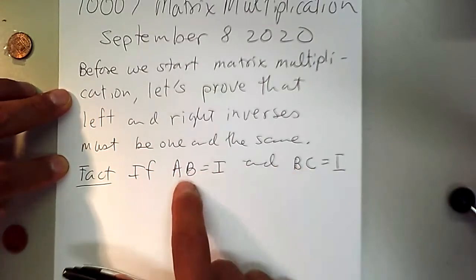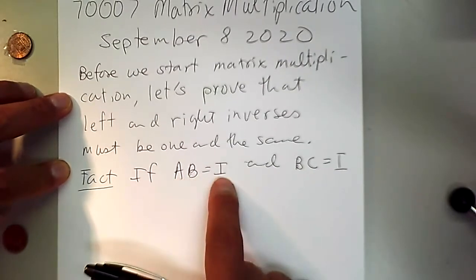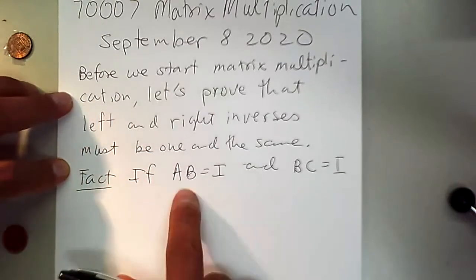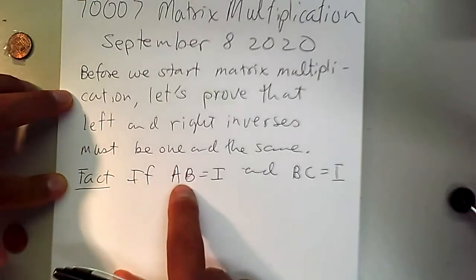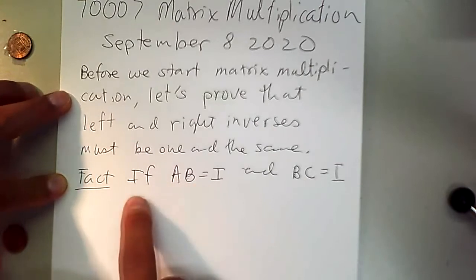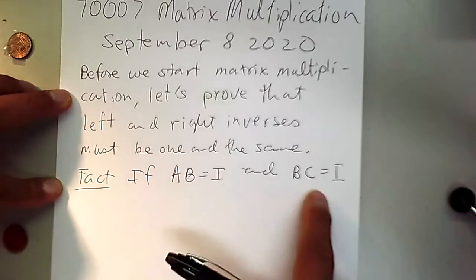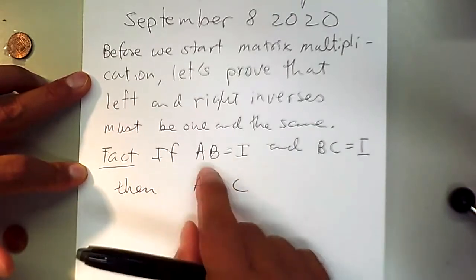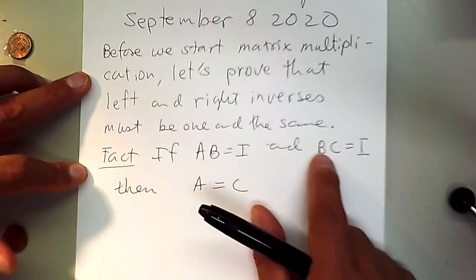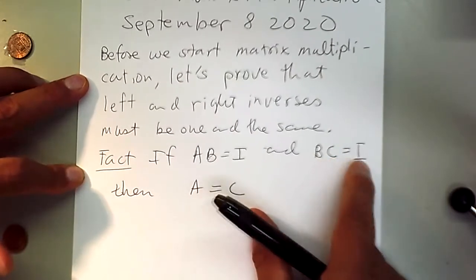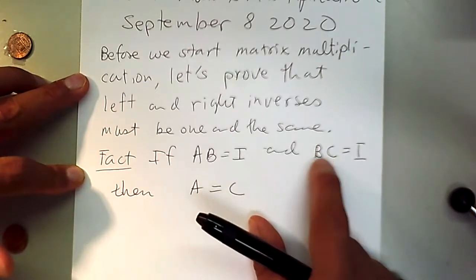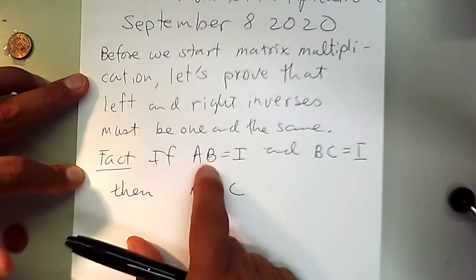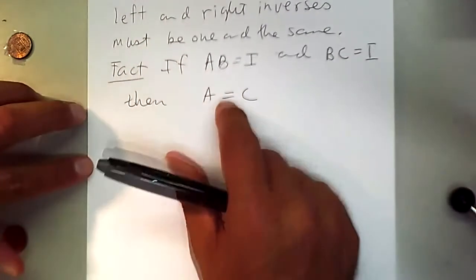All matrices are of the same size — if A is 3×3, so is B, and so is C. They don't have to be 3×3; they could be 2×2, 4×4, or 100×100, but they must be the same size. We assume AB = I and BC = I. A is a left inverse of B and C is a right inverse of B. The claim is that A must equal C.